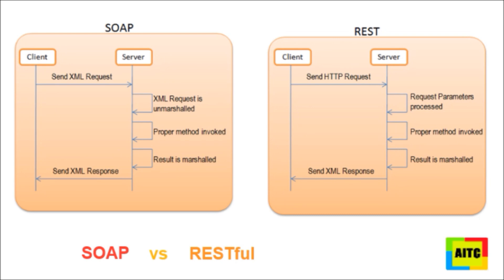curve. However, clients have to know what to send and what to expect. In general, when you're publishing an API to the outside world that is either complex or likely to change, SOAP will be more useful. If your application needs a guaranteed level of reliability and security, then SOAP offers additional standards to ensure this type of operation.